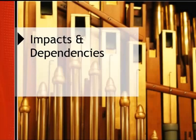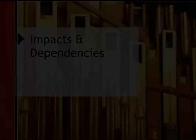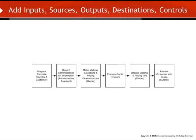If we went ahead and provided a solution for exactly what the gallery has requested, we would indeed improve their process. But let's step through the process again and look into the impacts and dependencies. We will consider inputs, sources, outputs, destinations, and controls over when a process happens.